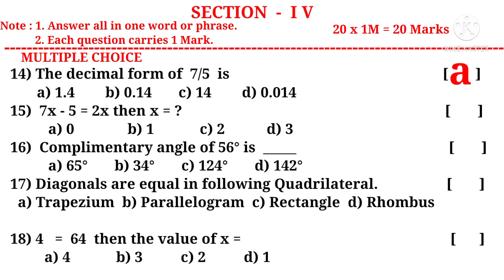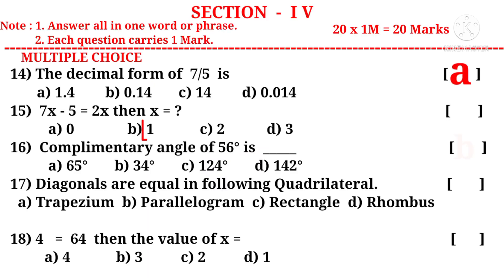Number 15: 7x - 5 = 2x, then x is equal to. 7x - 5 = 2x, then 7x - 2x = +5. So 5x = 5. x = 5/5. On simplification by 5, 5 ones. So x = 1. The correct choice is B.